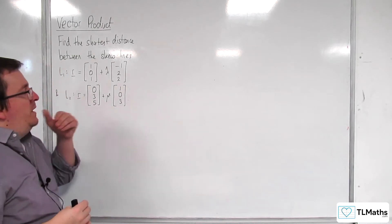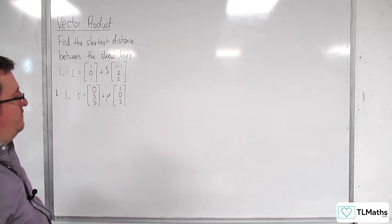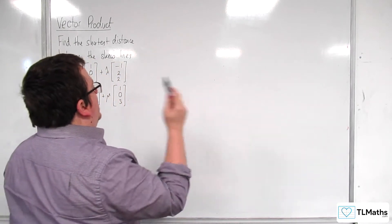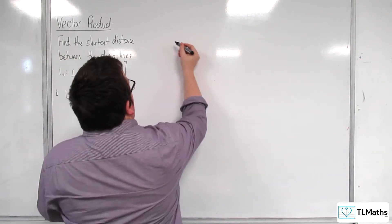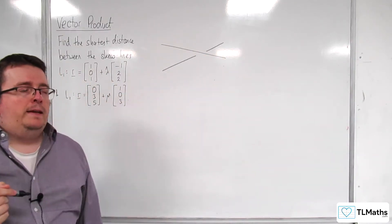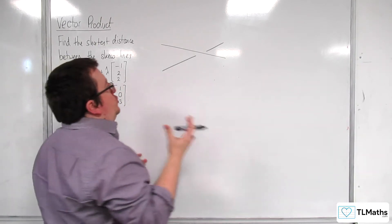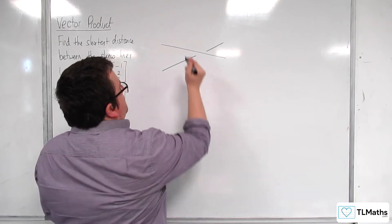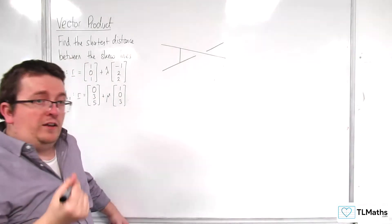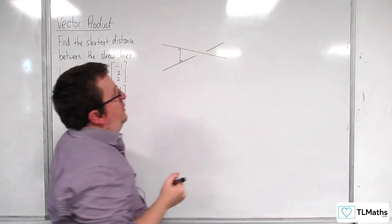We need to figure out how we're actually going to find the shortest distance between them. To help us out, let's draw a diagram. If I've got two skew lines, we would draw them like this, and we can agree that the shortest distance between them will be found by a line that is perpendicular to both.